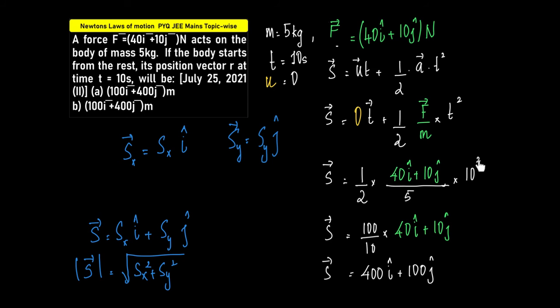t square will be 10 square. 10 square is 100. 2 into 5 is 10. 100 by 10 is 10. 10 into 40 would be 400. 10 into 10 would be 100.